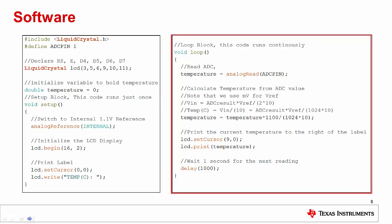Inside the loop block, we first take a reading from the ADC and store it in the variable temperature. Next, using the equations from slide 4 that describe the ADC output, we solve for temperature and calculate our temperature in degrees Celsius.